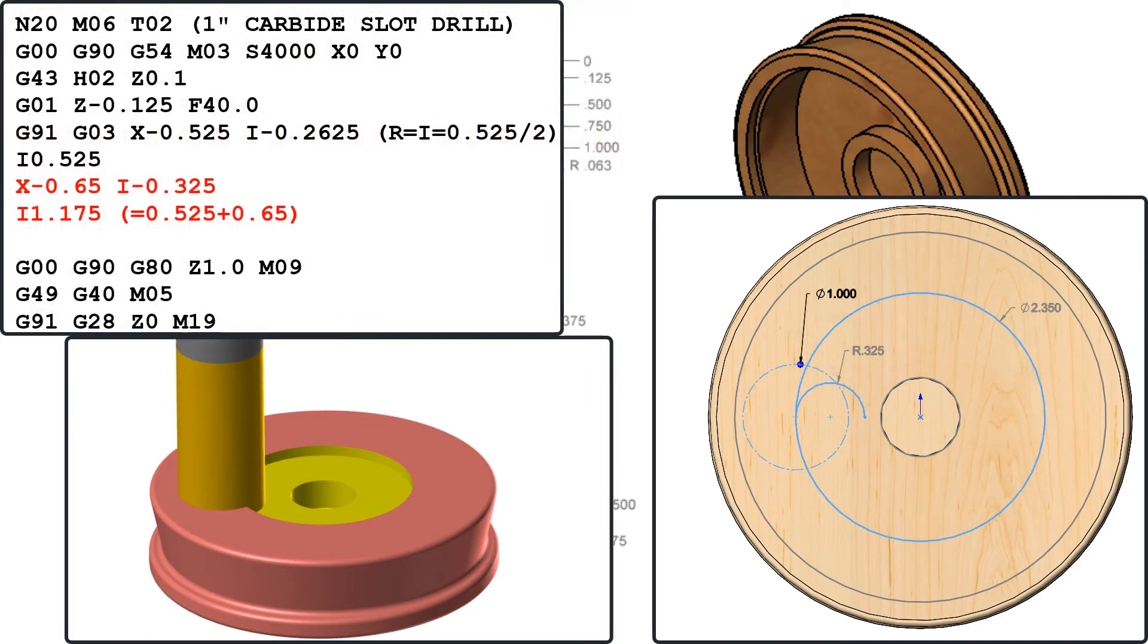Next I'll code X-0.65, I-0.325 to arc into the next cut followed by I 1.175 to cut the second rough pass.